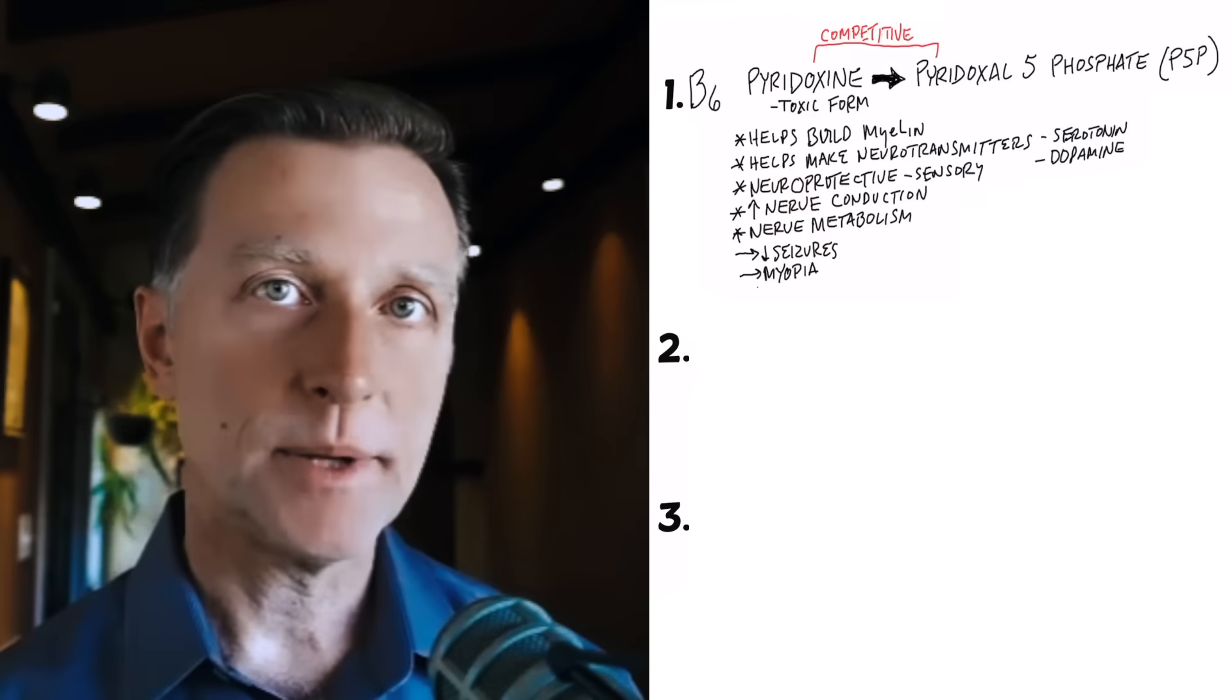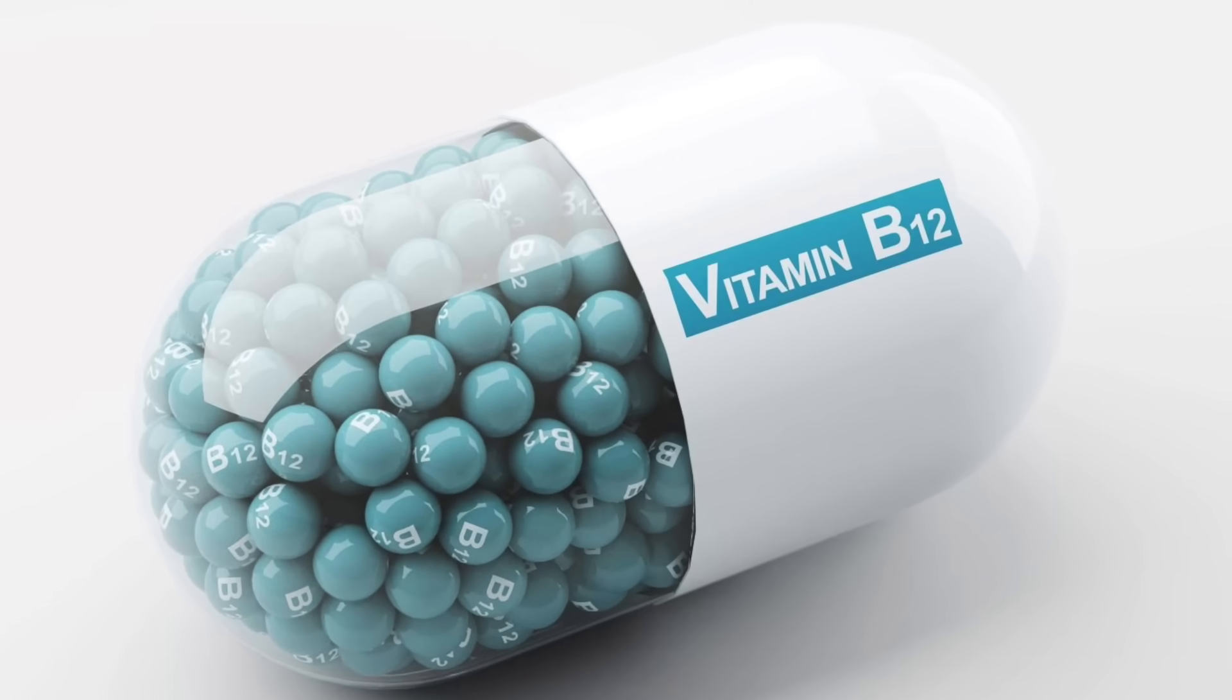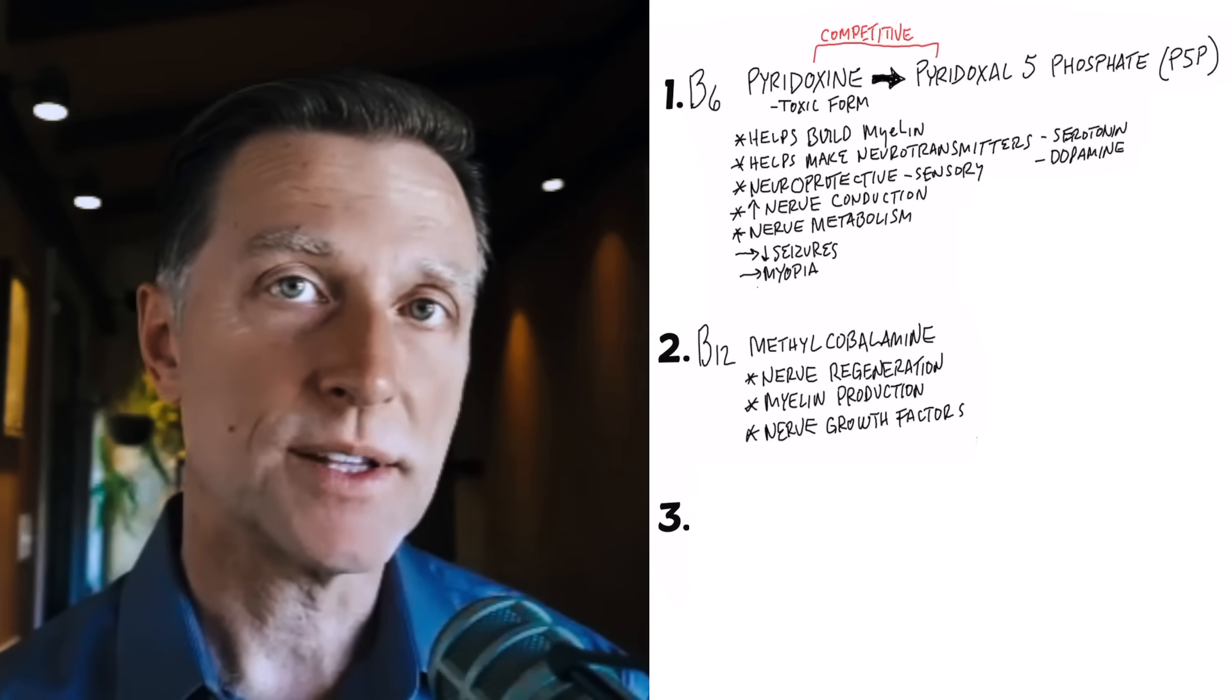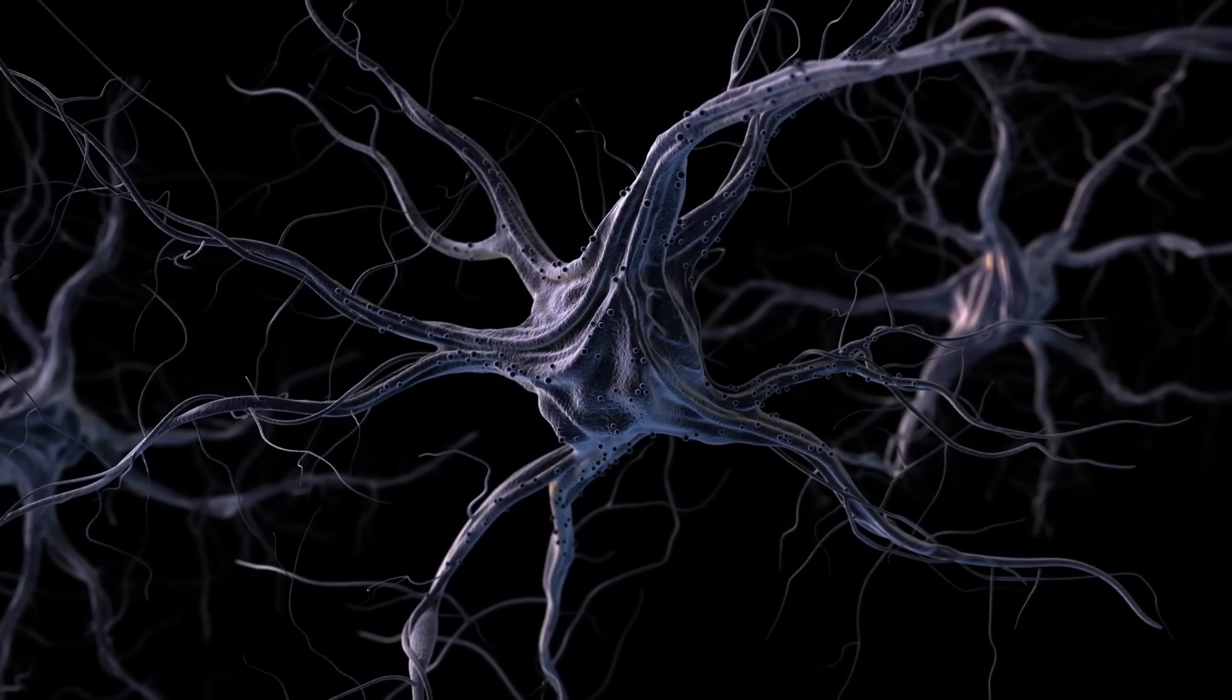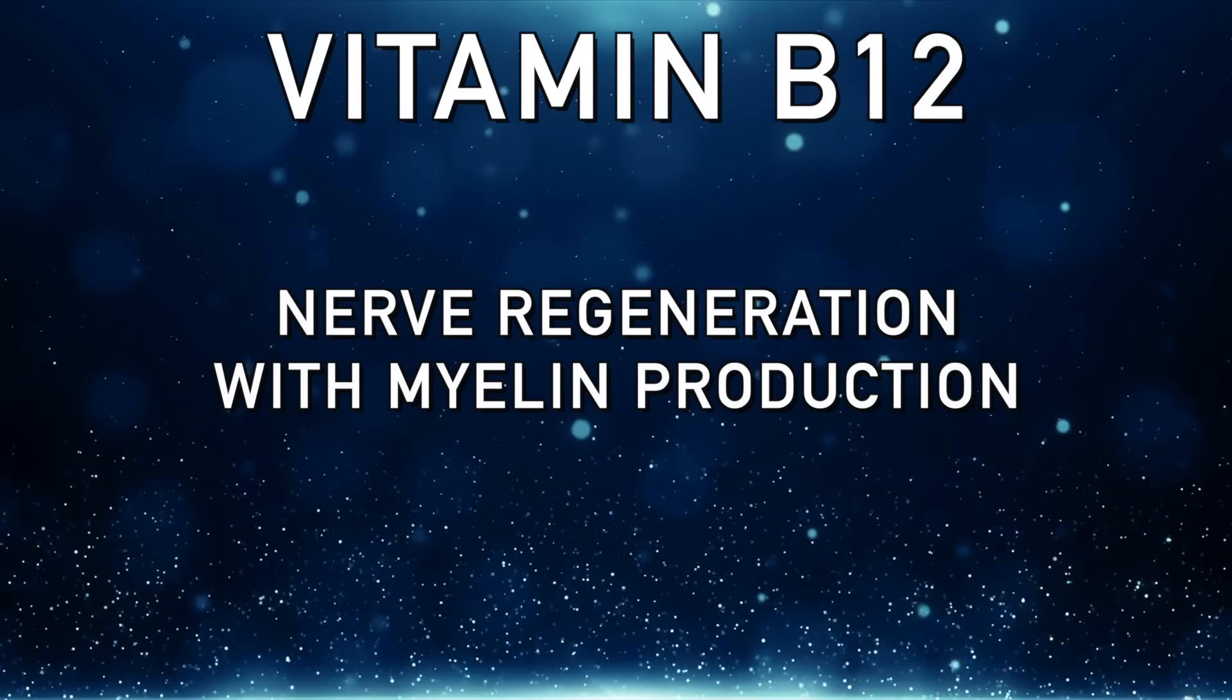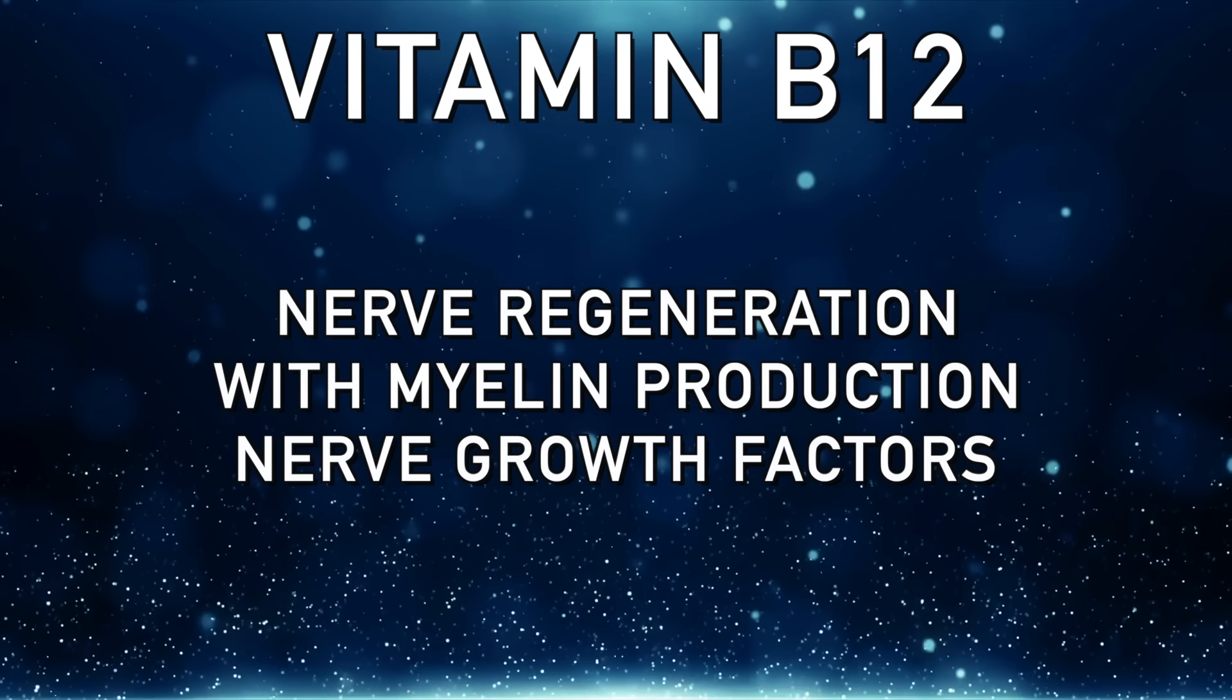The next most important vitamin involved with nerve problems is B12. I've done lots of videos on this topic. It's very insidious because it can sneak up on you. And by the time you know you have a B12 deficiency, potentially it could be too late because it can create some serious damage. But when you think about B12, you want to think about myelin, myelin sheath. That's that coating I just mentioned that surrounds the nerve and allows the nerve impulses to travel. Without B12, you can't make myelin. So, B12 has everything to do with nerve regeneration, with myelin production, and with nerve growth factors. So, B12 is very, very important.